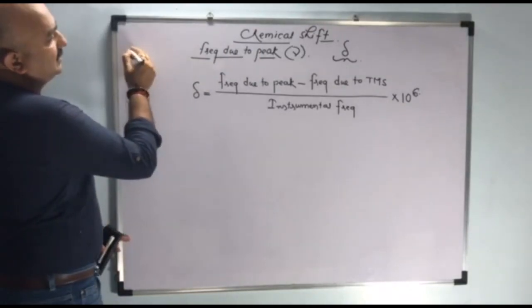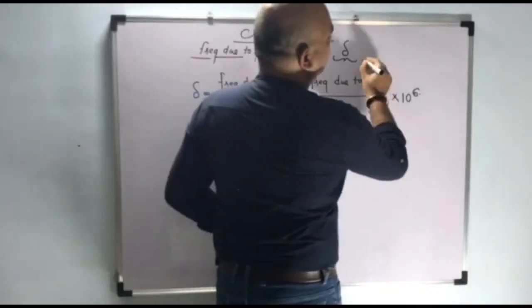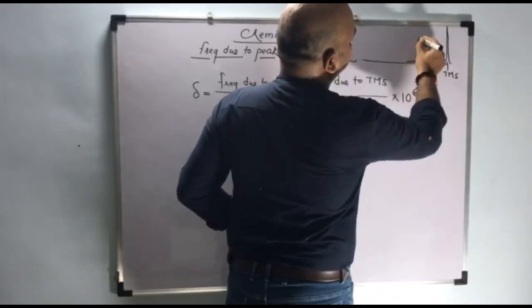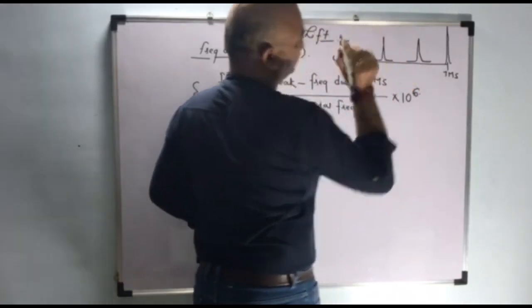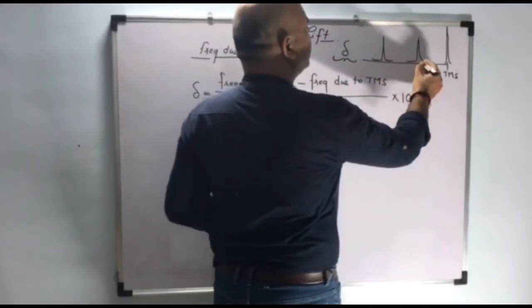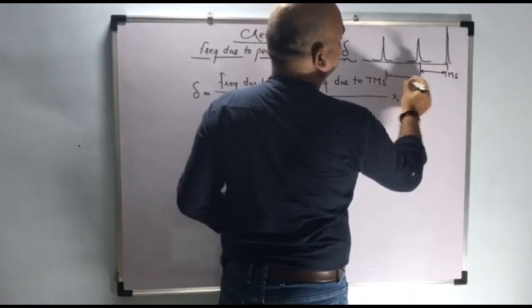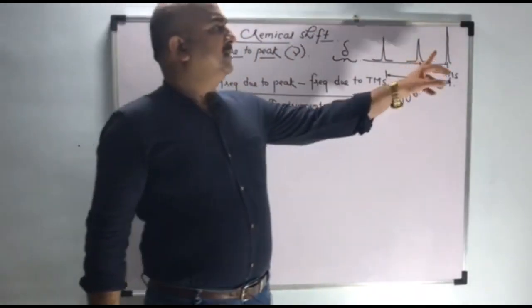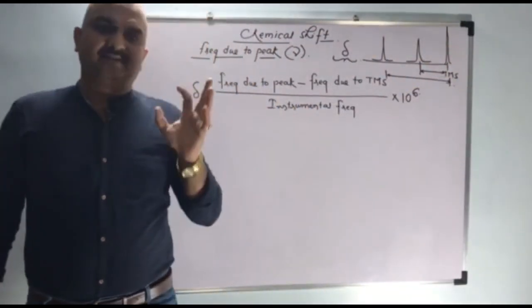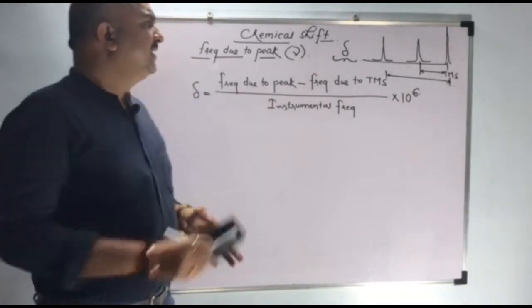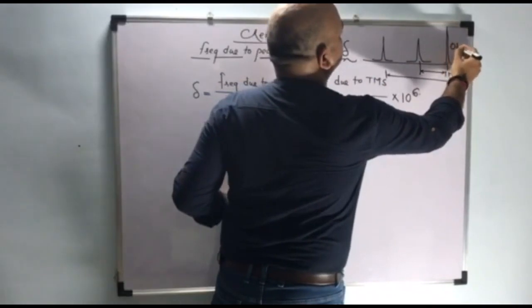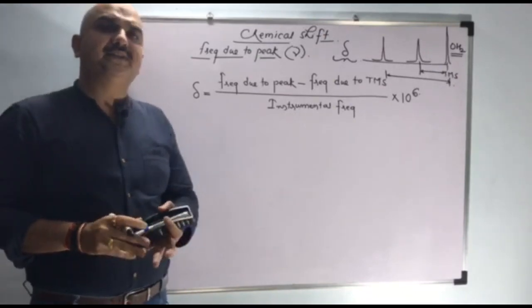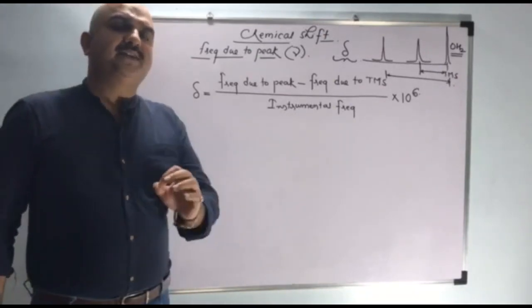We know that the TMS peak will come on the right-hand side. Consider these are two different peaks. Chemical shift is nothing but the separation of these two peaks. The resonating frequency due to the TMS peak is always taken as 0 hertz.